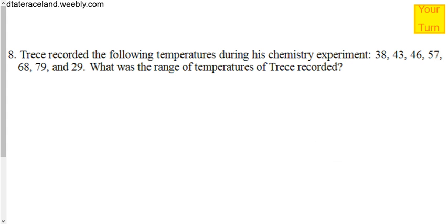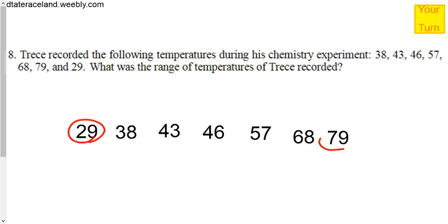Try it for number 8. Hit play when you're ready. Okay. So the following are temperatures recorded during a chemistry experiment. And let's go through and rearrange them from smallest to biggest. 29 is the smallest and 40, excuse me, 38 and 43, 46, 57, 68, and 79. And so our smallest is 29. Our largest is 79. So 79 minus 29 is 50. So our range is 50. There's a 50 degree difference between the highest number and the smallest number, between the maximum temperature and the minimum temperature.